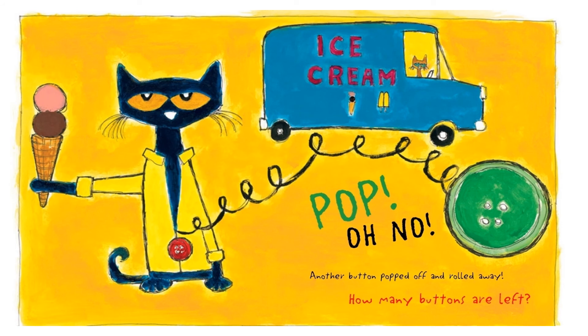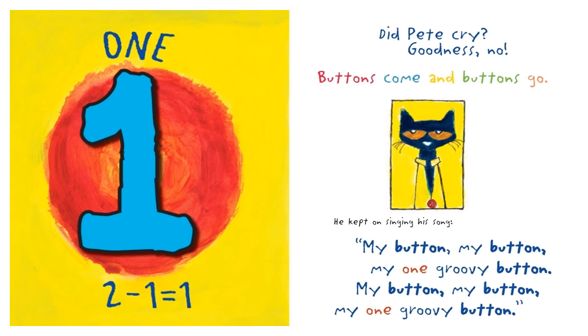Pop! Oh no! Another button popped off and rolled away. How many buttons are left? One. He had two buttons and one button popped off. Now there is one button left. Two minus one equals one.